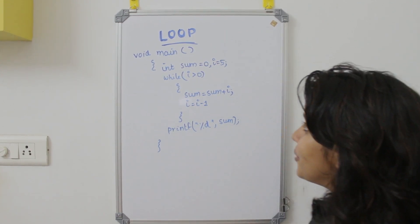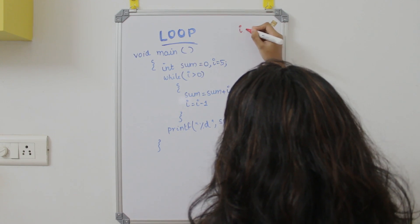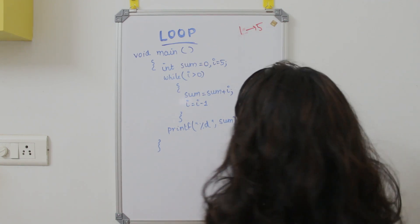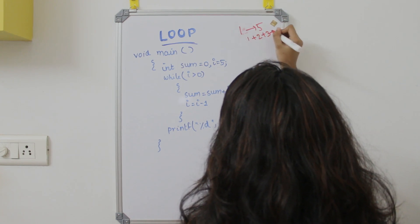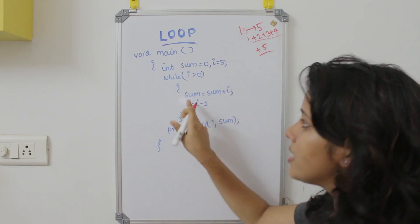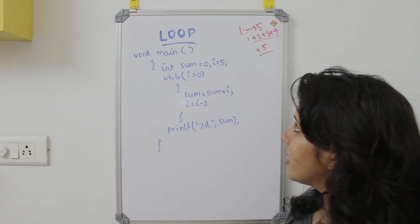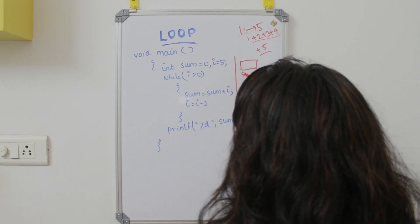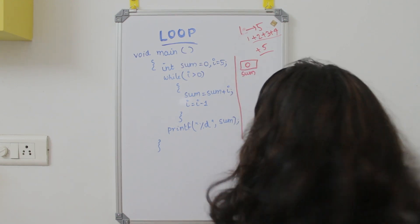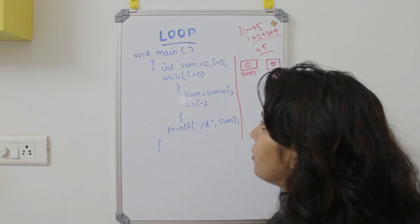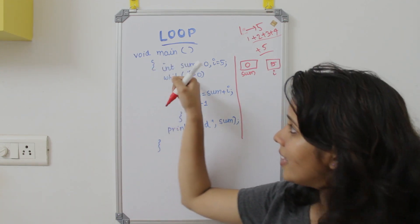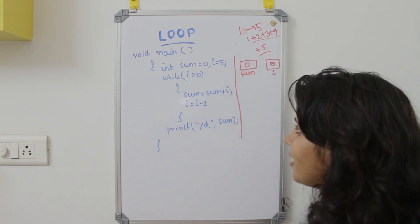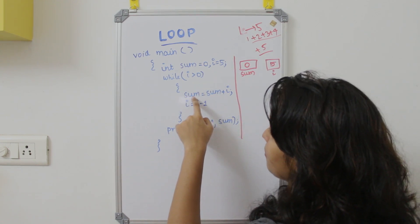Now I will explain a program using the while loop. We have a number of numbers and we want to find the sum: 1 plus 2 plus 3 plus 4 plus 5. We will assign the sum to a variable. We initialize sum to 0 in a memory location. We initialize i to 5. The condition is i greater than 0.